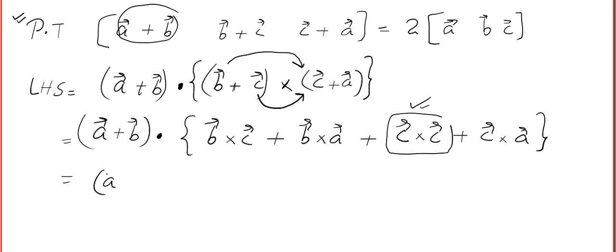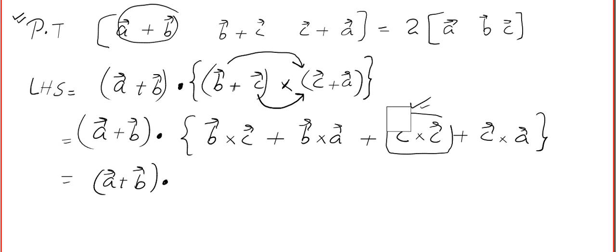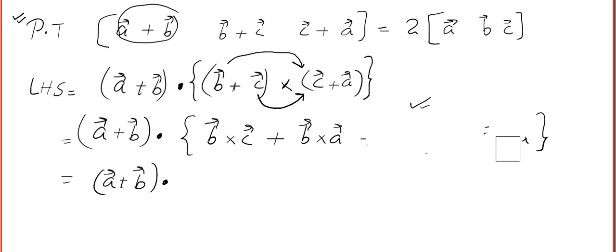We get (A+B) dotted with the expanded cross product. Since C×C equals zero, that whole part vanishes. Note: in the exam, do not skip steps like this — write all necessary steps properly.